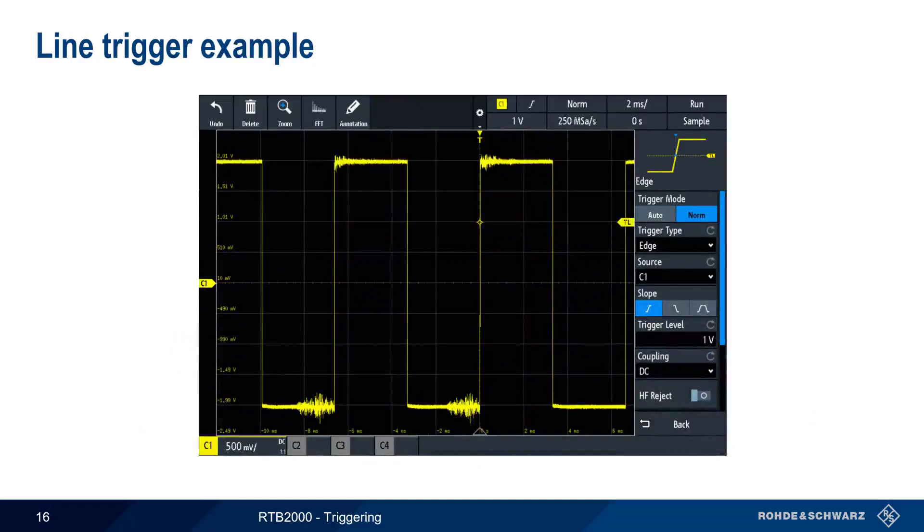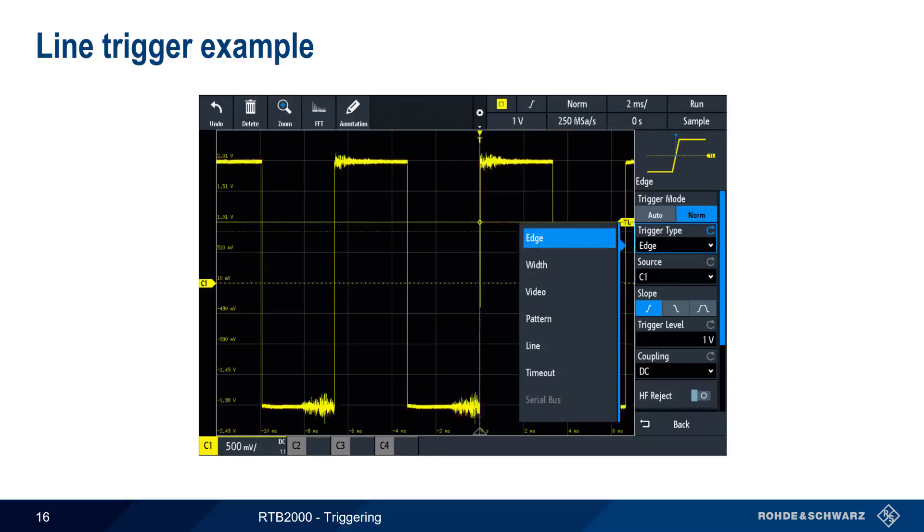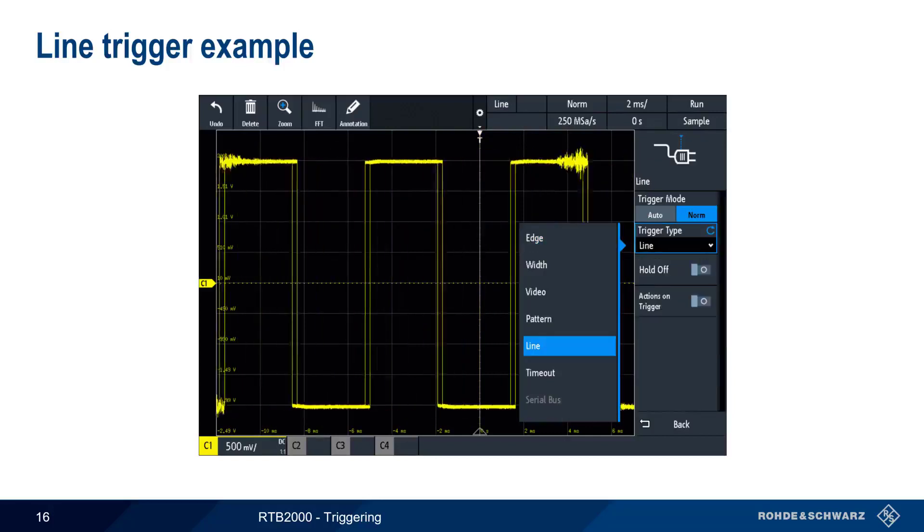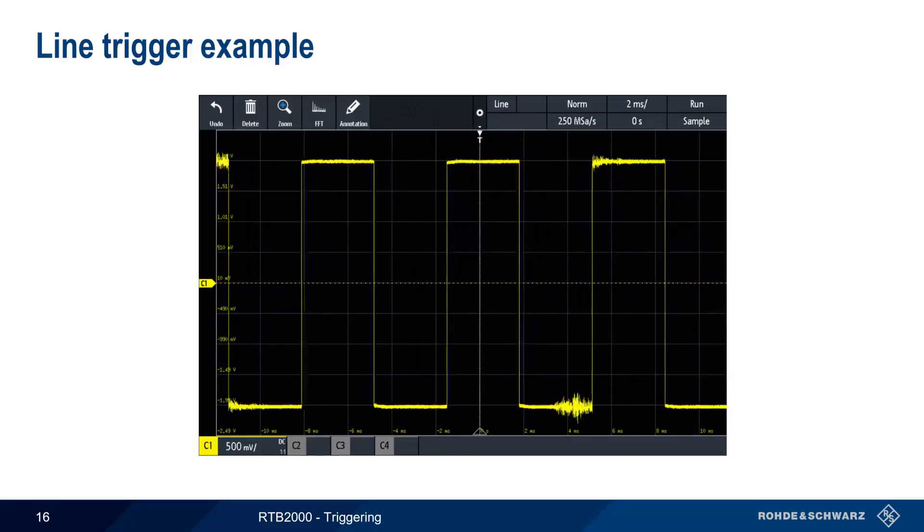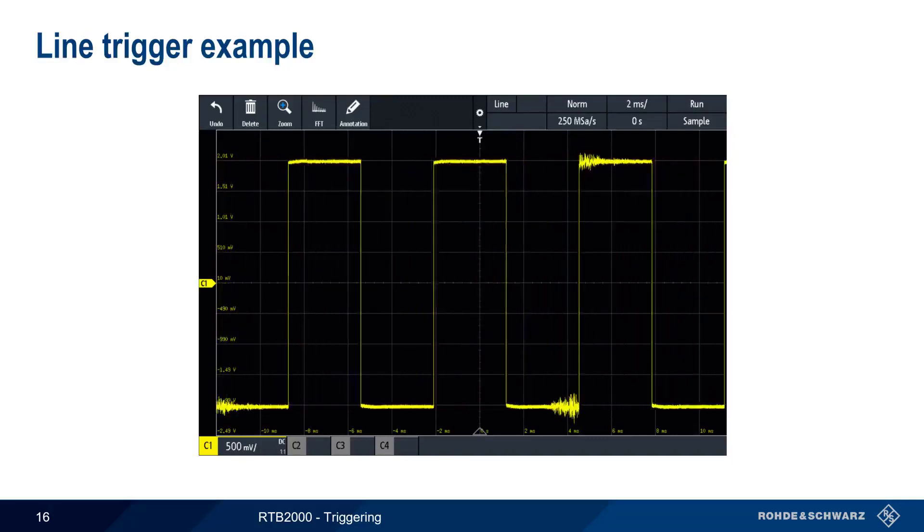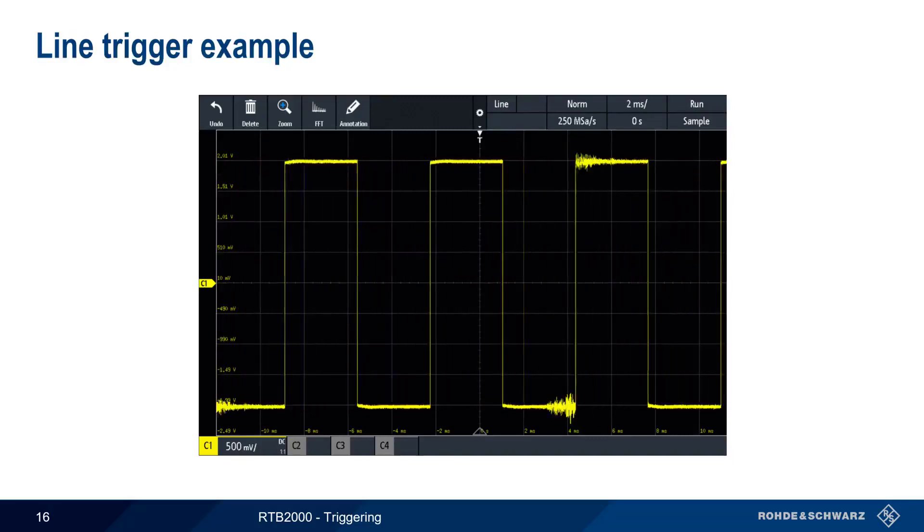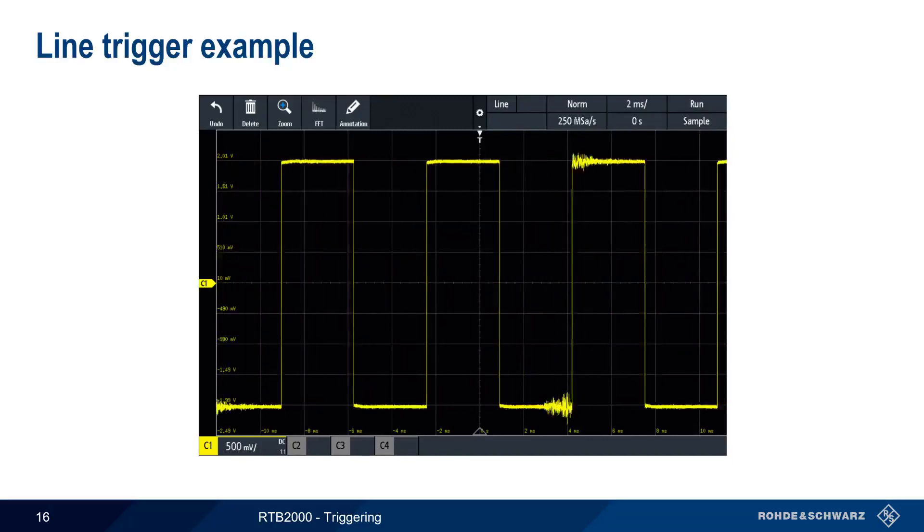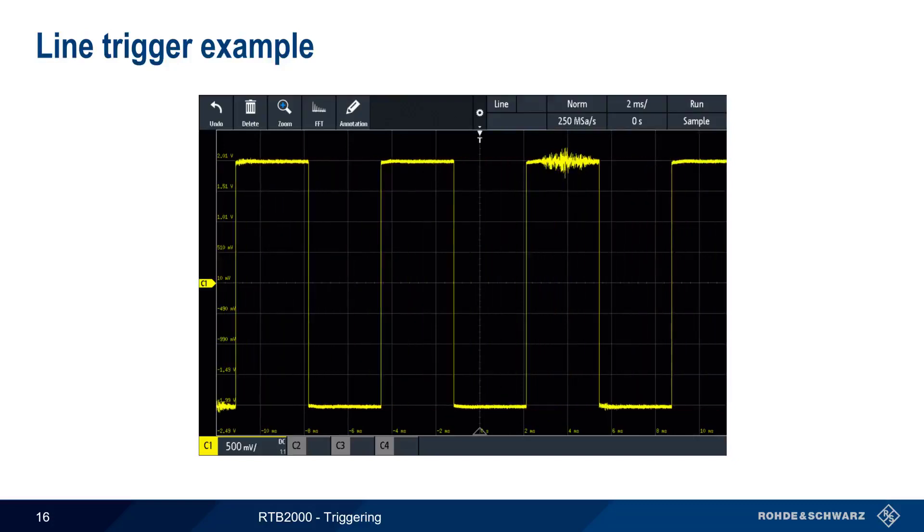If we look at this waveform with a standard edge trigger, it's difficult to draw any conclusions about the source of these noise bursts. However, if we switch our trigger type to line, it's easy to see that the noise bursts are synchronized with the AC line or mains voltage. The bursts of noise remain stationary on the screen, even though the waveform is moving.